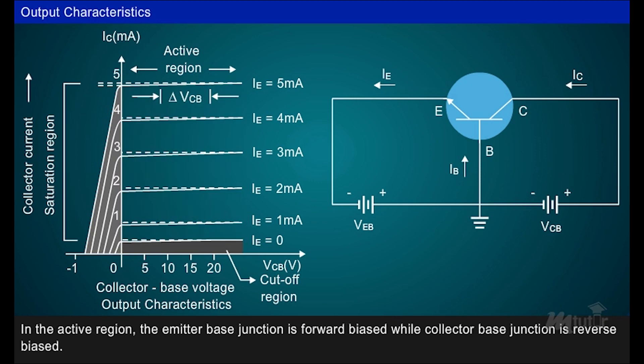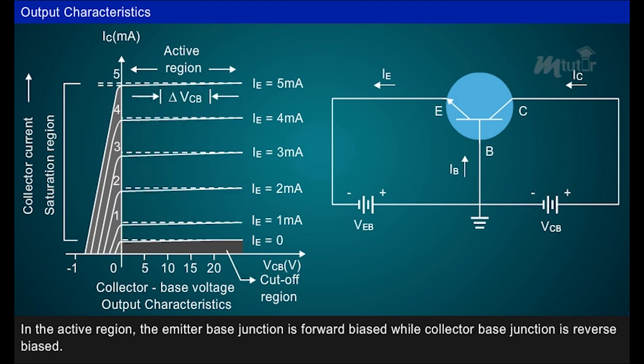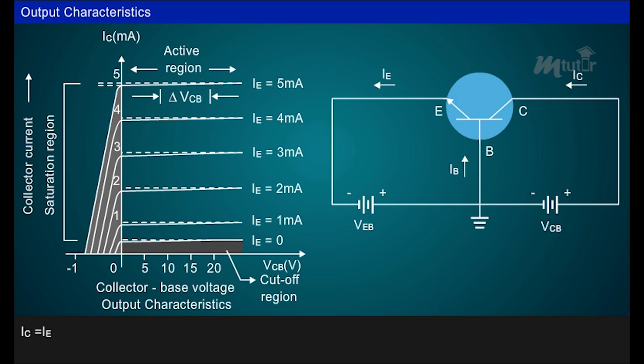For the operation in the active region, the emitter base junction is forward biased while collector base junction is reverse biased. In this region, collector current IC is approximately equal to the emitter current IE and the transistor works as an amplifier.